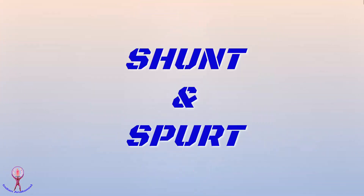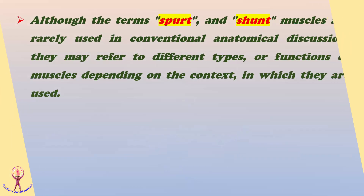The subtopic under discussion is the comparison between shunt and spurt muscles, which falls within the broader context of the muscular system. Although the terms spurt and shunt muscles are rarely used in conventional anatomical discussion, they may refer to different types or functions of muscles depending on the context in which they are used.